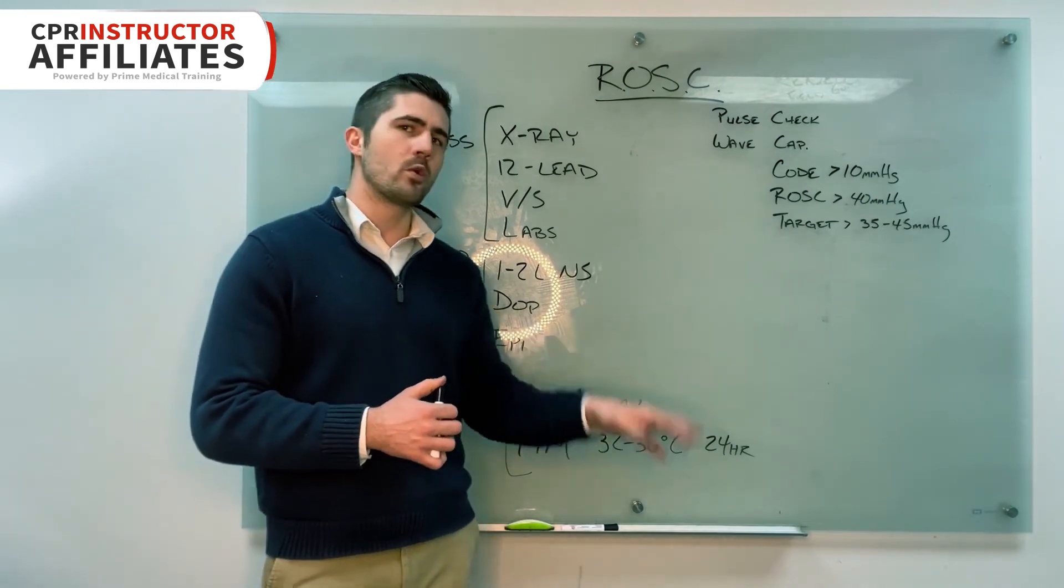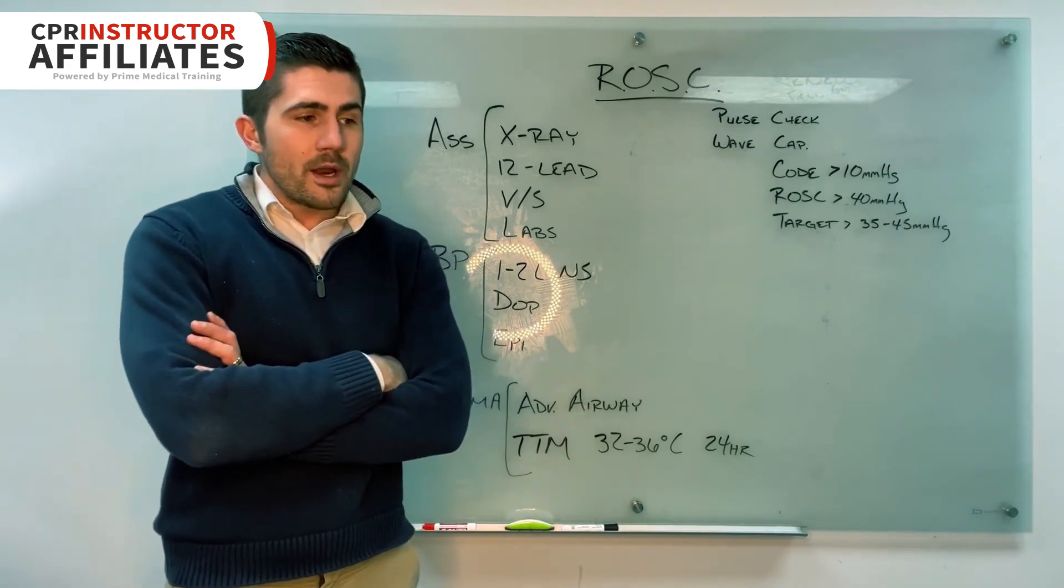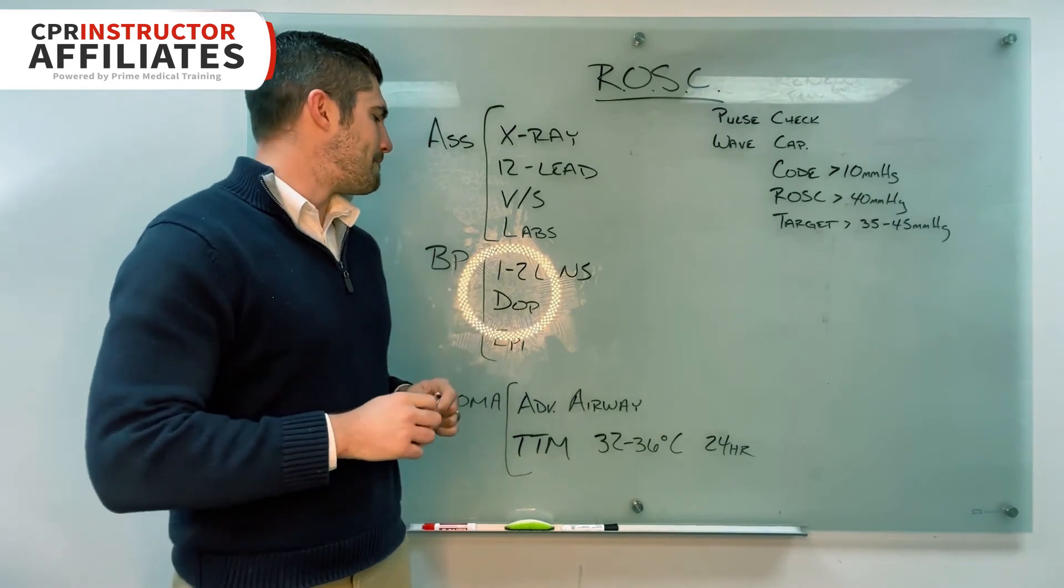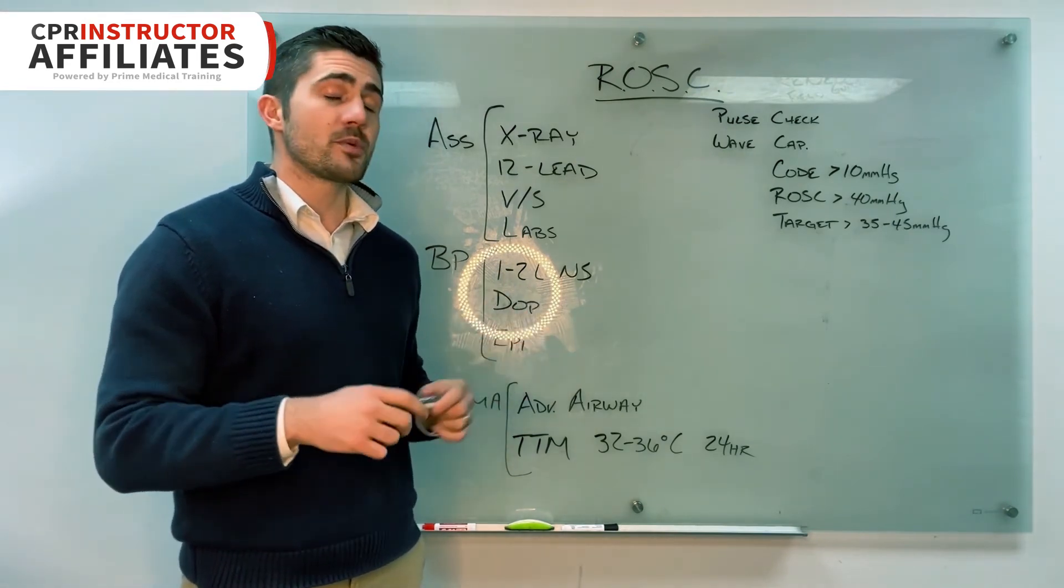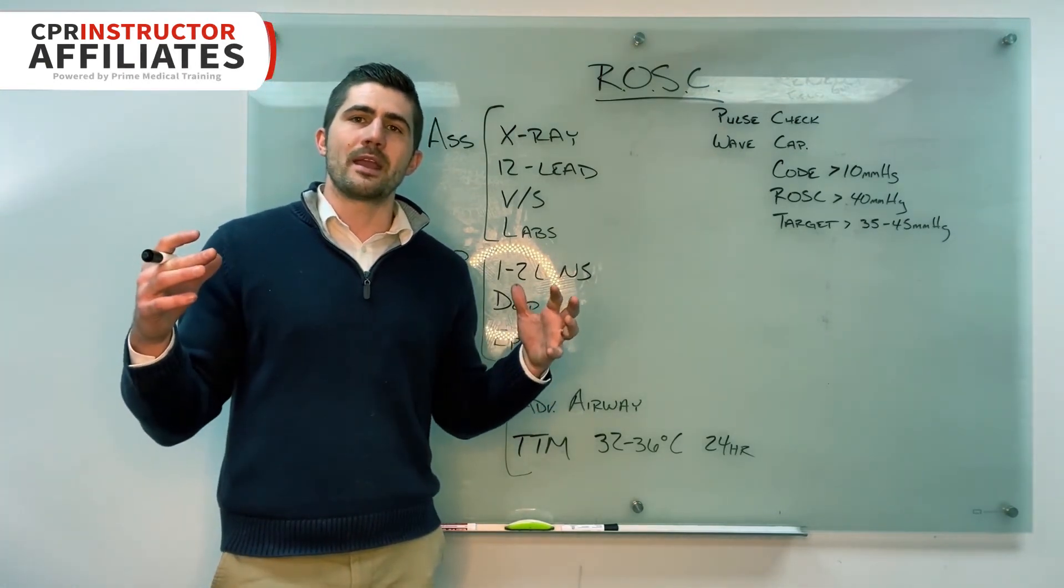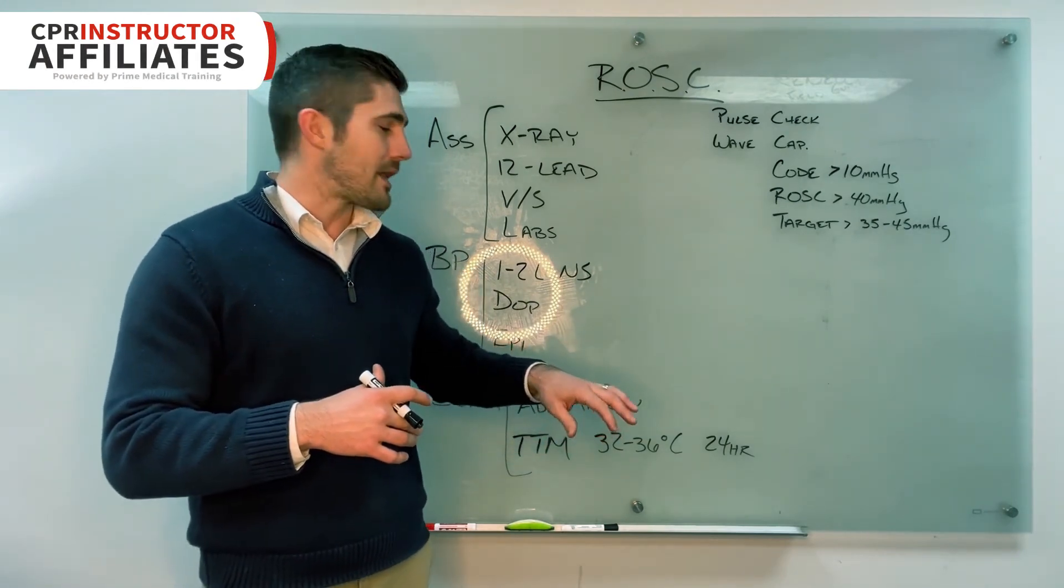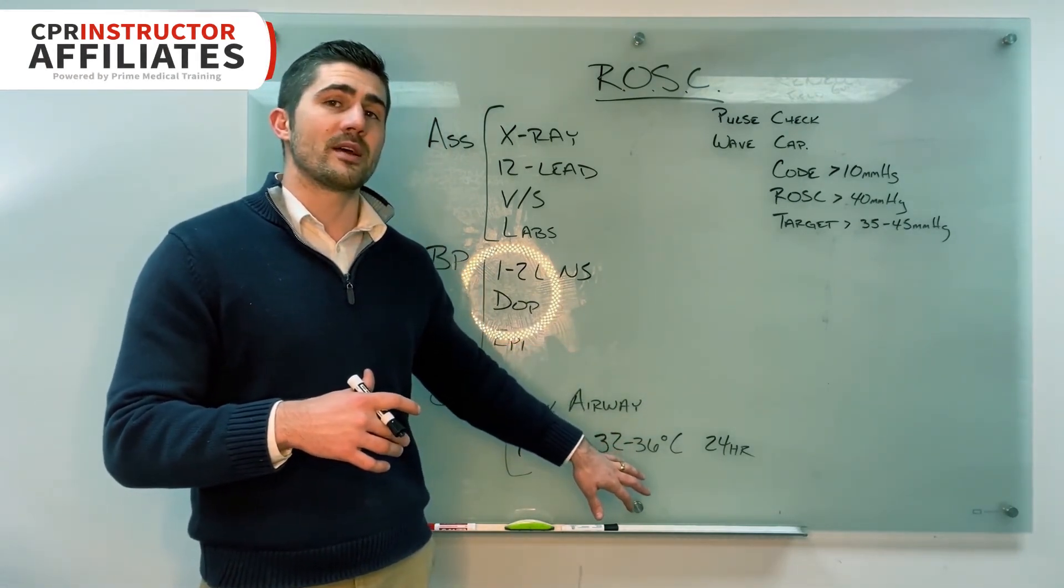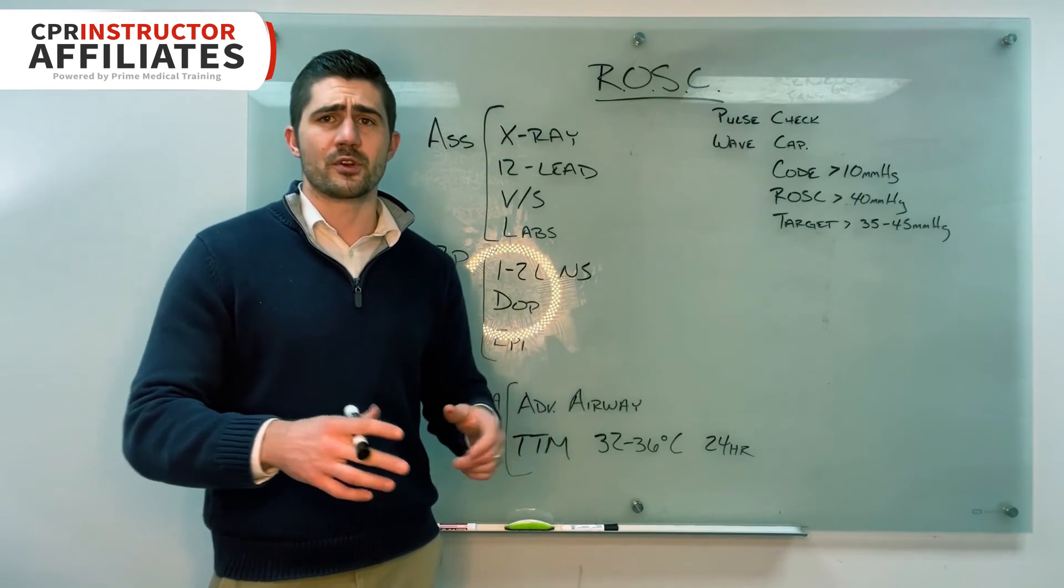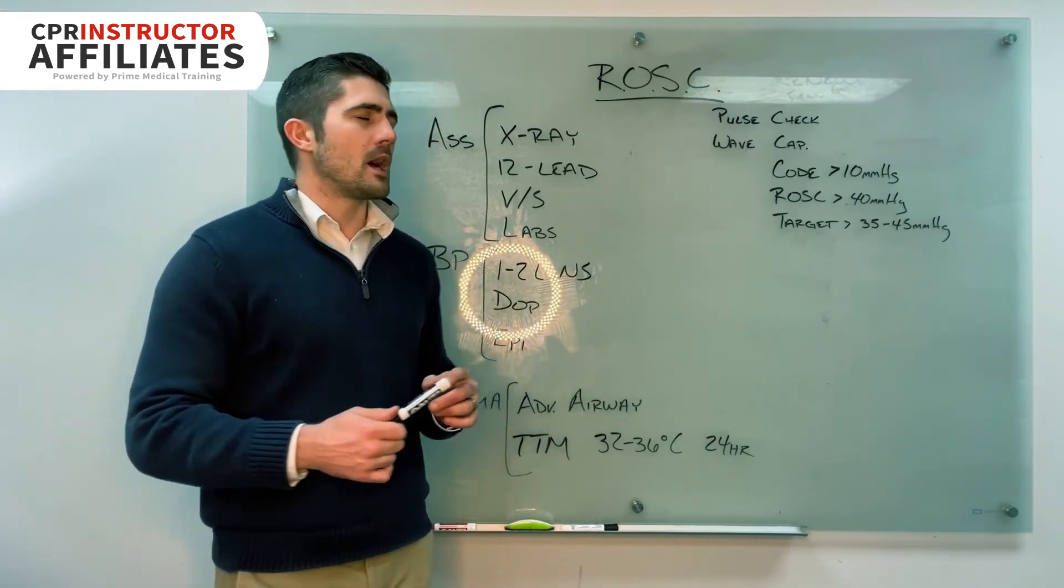So target temperature management, we cool them down for two reasons, actually. Most people only know one or the other. One is we are trying to preserve the person's neuro. And so making sure that they don't have any deficits post-cardiac arrest. And a lot of people, when they come out of cardiac arrests are febrile. And so it can damage brain cells and by cooling them down, we're preserving their brain and making sure they come out intact neurologically.